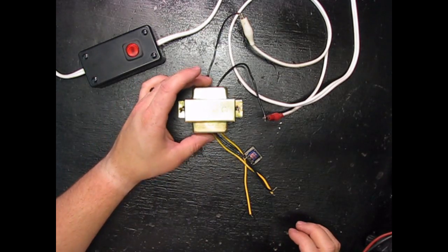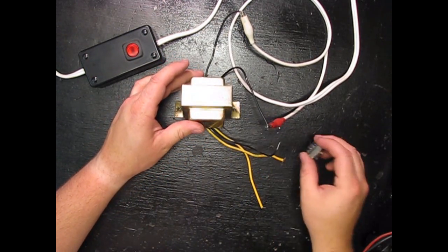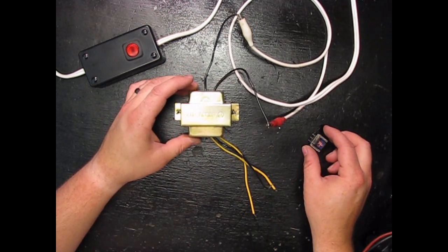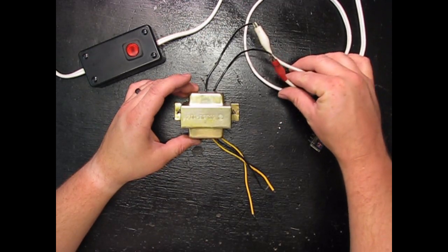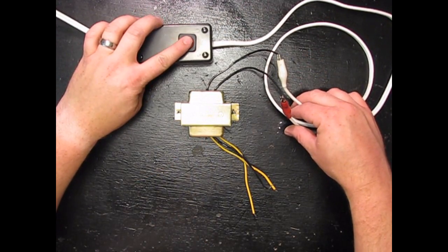So what is a transformer? This is an example of a transformer, and a transformer is used to either step up or step down alternating current. Here I have basically a power cable with a switch on it.